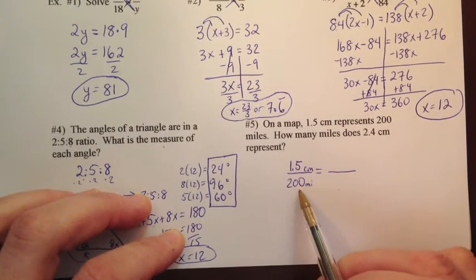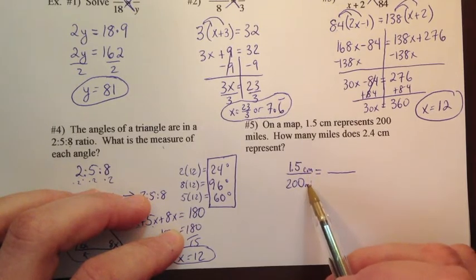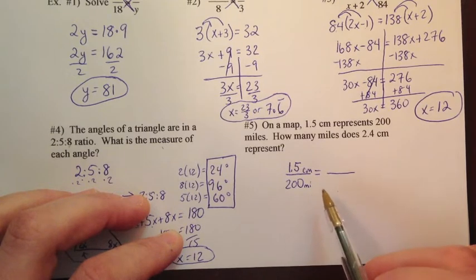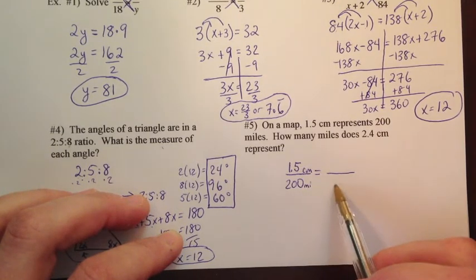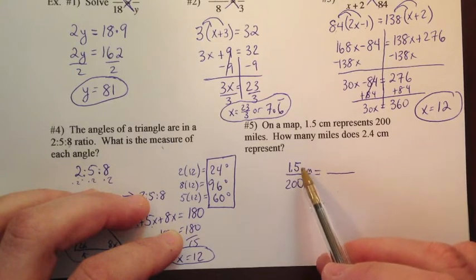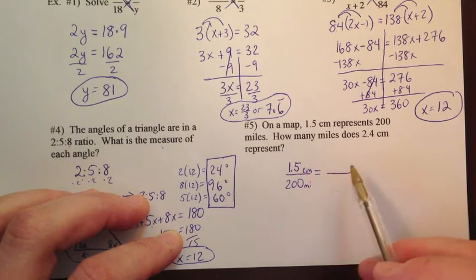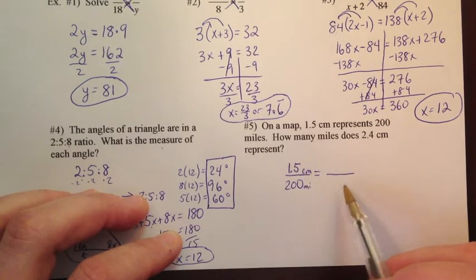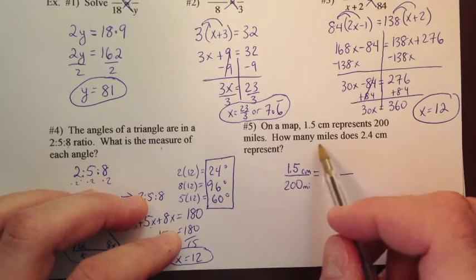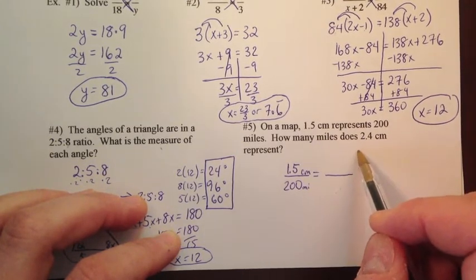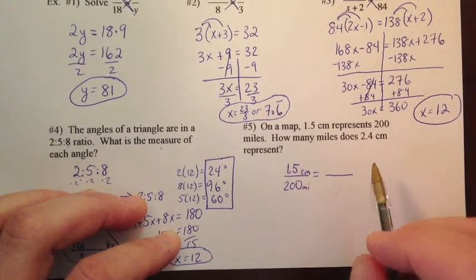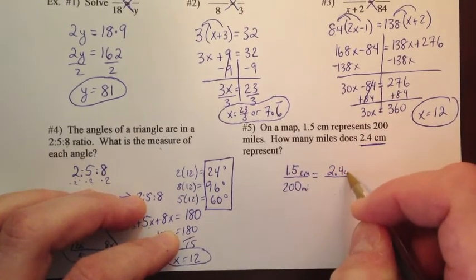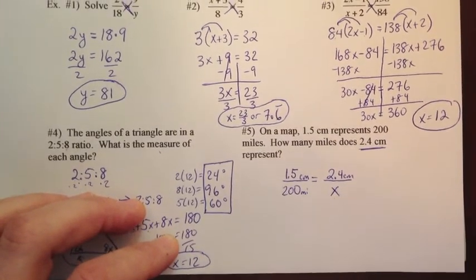What we want to do is fill these numbers in and solve for the missing piece. So they tell us 1.5 centimeters. So I'm going to put 1.5 on the top. Represents 200 miles. So I got 1.5 centimeters goes with 200 miles. So I'm doing centimeters over miles. The key thing with a proportion is you have to compare each ratio the same way. You have to set it up the same way. If this ratio here is centimeters over miles, then this one has to be centimeters on top, miles on the bottom. I have to set it up the same way. So how many miles does 2.4 centimeters represent? So 2.4 centimeters is on top. And then this is x right there.